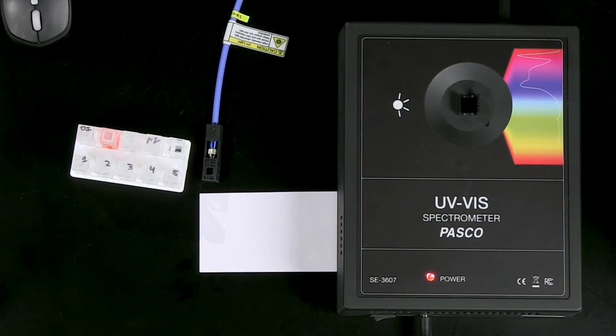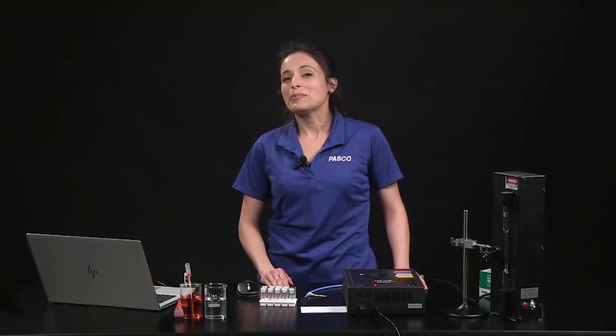The UV-VIS spectrometer has a wavelength range from 180 nanometers to 1050 nanometers. This range includes a portion of the UV range and the entire visible range and part of the near-infrared region of the electromagnetic spectrum.